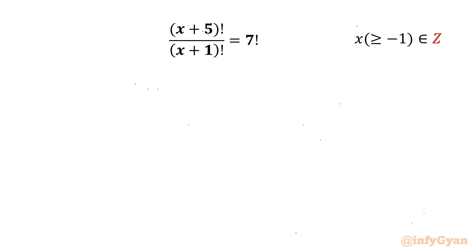Welcome back to Infigr, my dear friends. In this video we are going to take up one very interesting factorial equation. It is (x+5)! over (x+1)! equal to 7!, where x belongs to integers greater than or equal to negative 1.